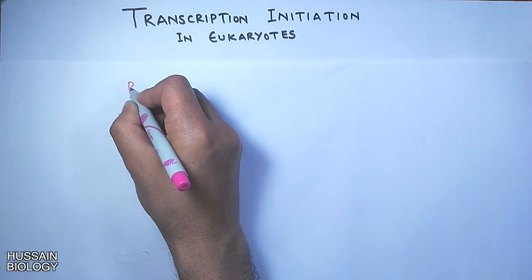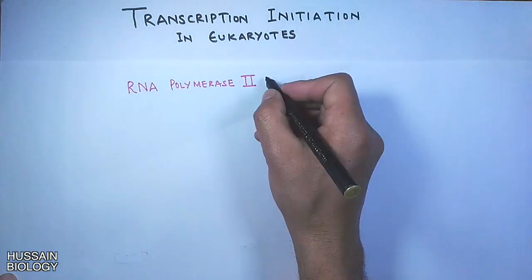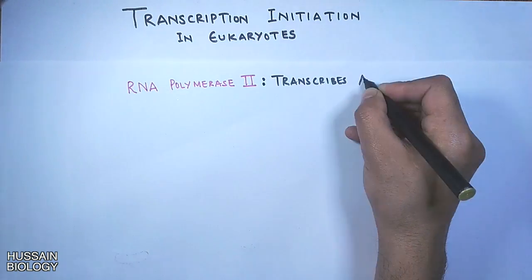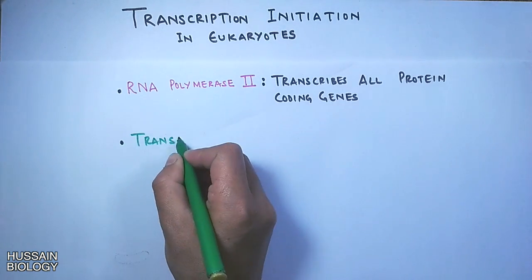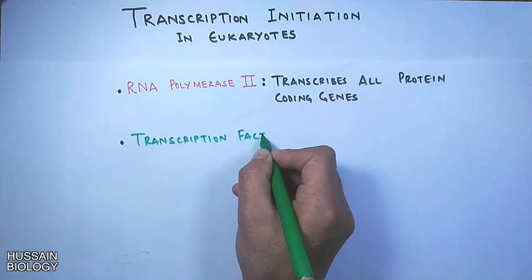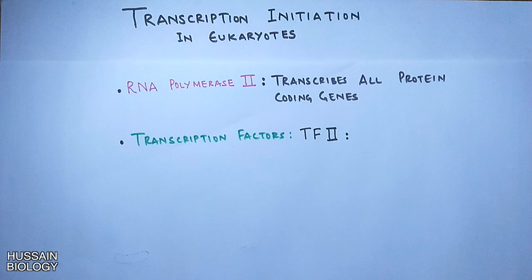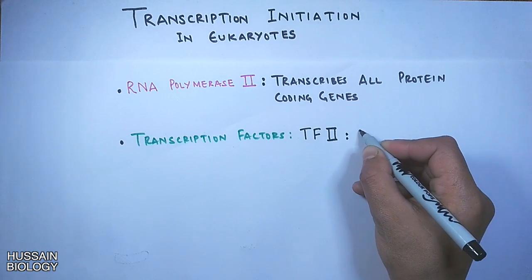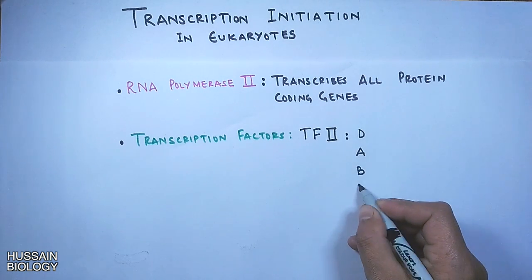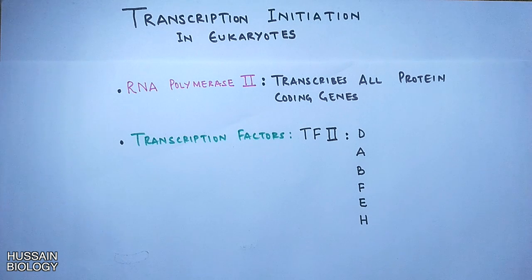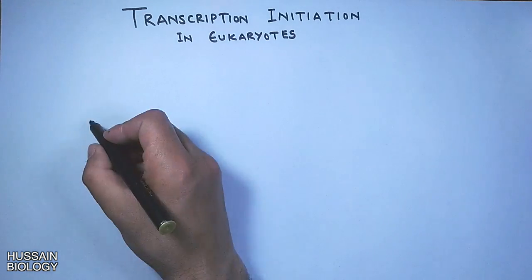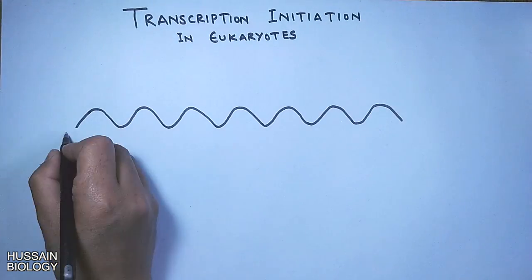Before we get into the detailed mechanism, we know it is RNA polymerase 2 that transcribes all protein-coding genes. For this transcription we also need several general transcription factors called Transcription Factors 2, which includes TF2D, TF2A, TF2B, TF2F, TF2E, and TF2H — these are the six general transcription factors.